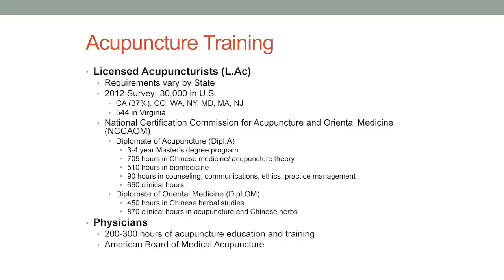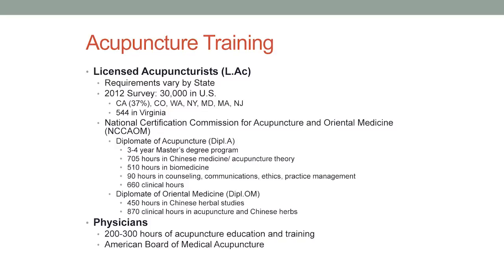So who is a licensed acupuncturist and what does the training entail? Licensure varies by state, but most states require board certification. A 2012 survey showed about 30,000 licensed acupuncturists in the country — a very large portion, 37%, are in California. The rest are mostly in Colorado, Washington, New York, Maryland, Massachusetts, and New Jersey, where some of the major schools are. That survey found 544 in the entire state of Virginia.